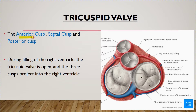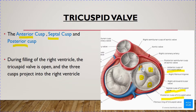The tricuspid valve is made up of three cusps: the anterior, septal, and posterior cusps. You can see in this figure the septal cusp, the anterior cusp, and the posterior cusp of the tricuspid valve. These cusps are united at the regions of the commissures, and they are attached to the fibrous ring of the tricuspid valve.